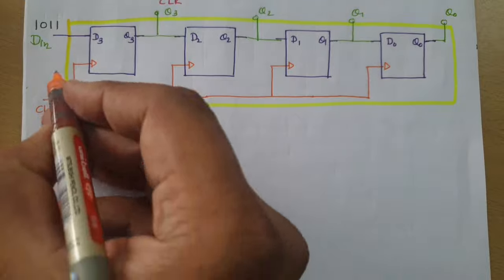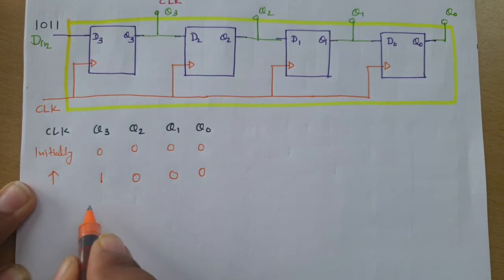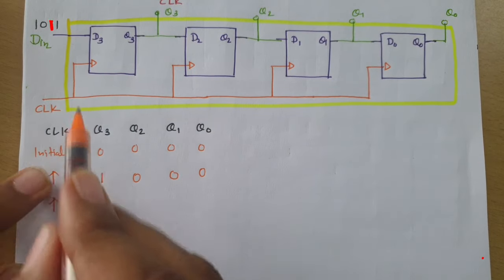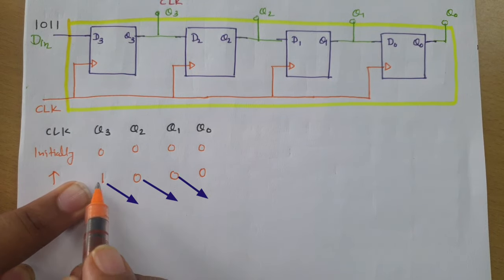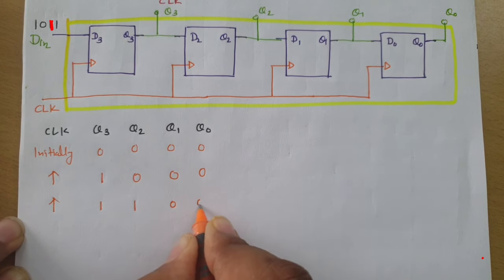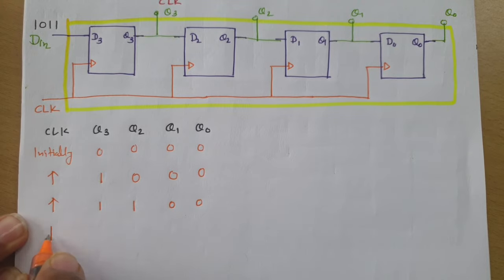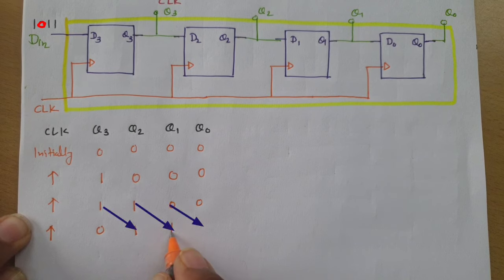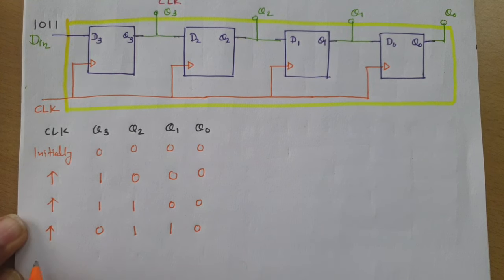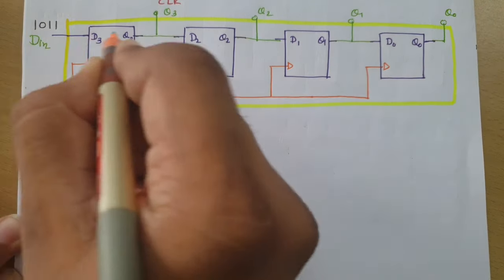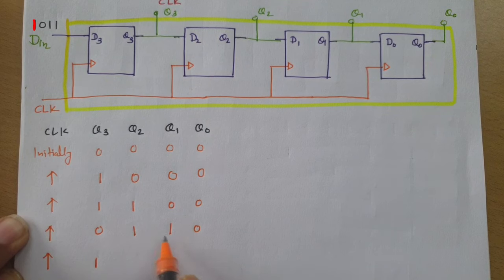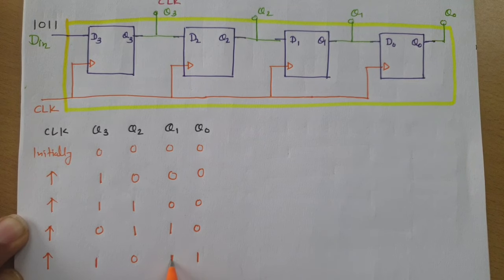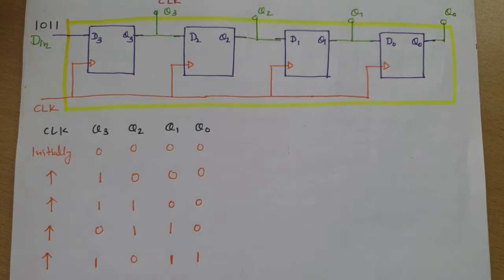After the next clock, the second '1' appears at Q3 and the previous data shifts in the same direction — '1' moves here, '0' comes here, and '0' comes here. After another clock, '0' appears at Q3, '1' shifts over, '1' shifts over, and '0' comes here. After one more clock, the last '1' comes to Q3 and the data shifts: '0' here, '1' here, '1' here.